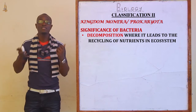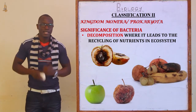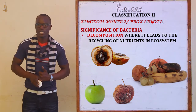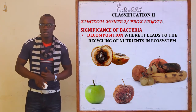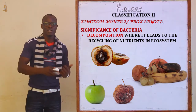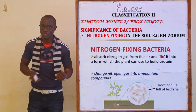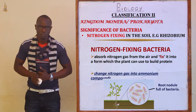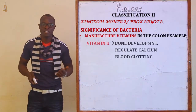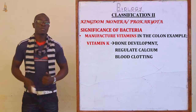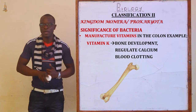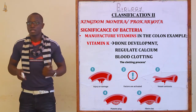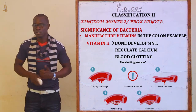What is the significance of bacteria? First is decomposition, which leads to the recycling of nutrients in the ecosystem — bacteria decompose food and return nutrients to the ecosystem. Another significance is nitrogen fixing, whereby rhizobium bacteria fix nitrogen in the soil for other plants to consume. Some bacteria also manufacture vitamins, especially in the colon — for example, Vitamin K, which facilitates bone development and regulation of calcium, and is important for the blood clotting process.